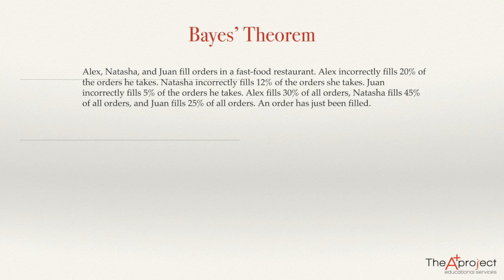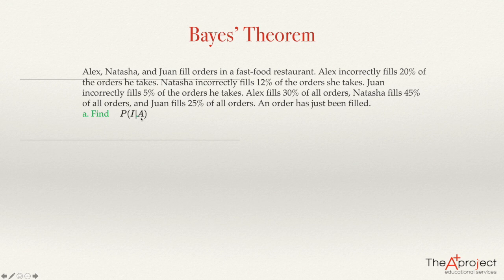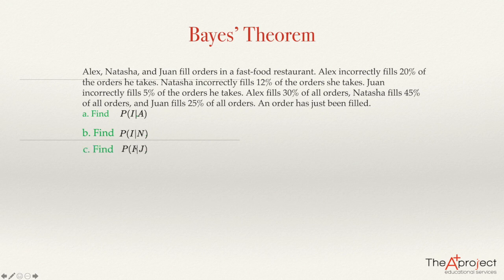An order has just been filled, and I'm going to ask some questions. Find the probability that the order is incorrect, given that it was filled by Alex — I'll use the letter I for incorrectly filled and A for the order was filled by Alex. B: find the probability that the order was filled by Natasha. And find the probability that the order is filled incorrectly given that the order was filled by Juan. The answers to these questions are given in the information of the problem.